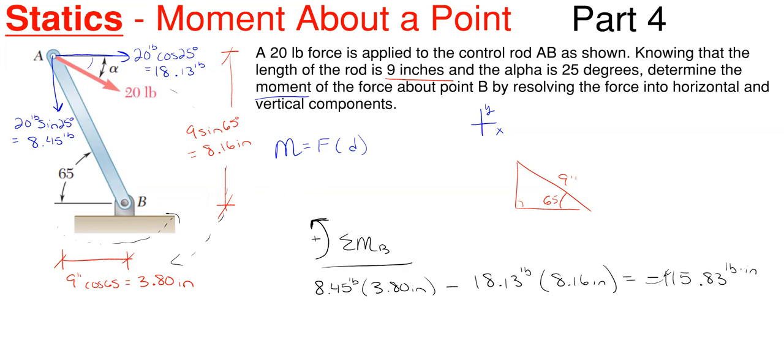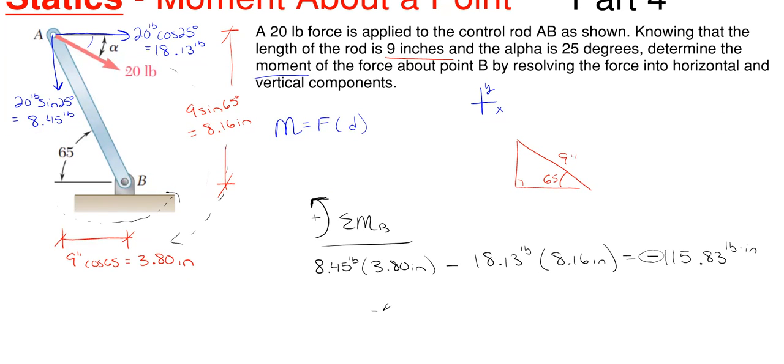And since I have a negative sign here, that means that I'm opposite my positive sign convention. So what I have going on here is that my total moment about B would be 115.83 pound inches of clockwise rotation about point B.